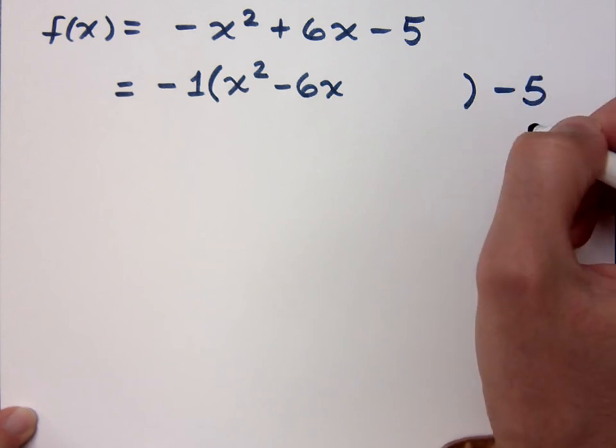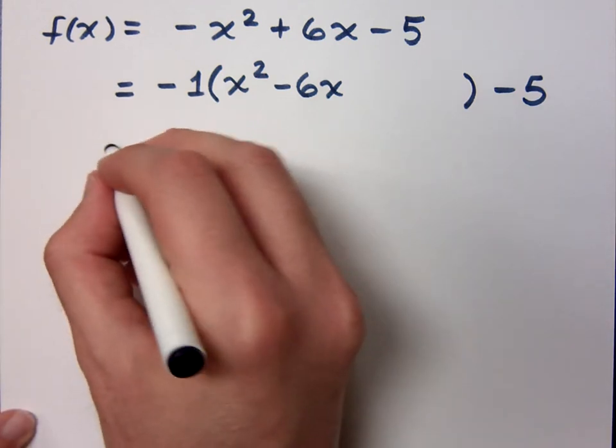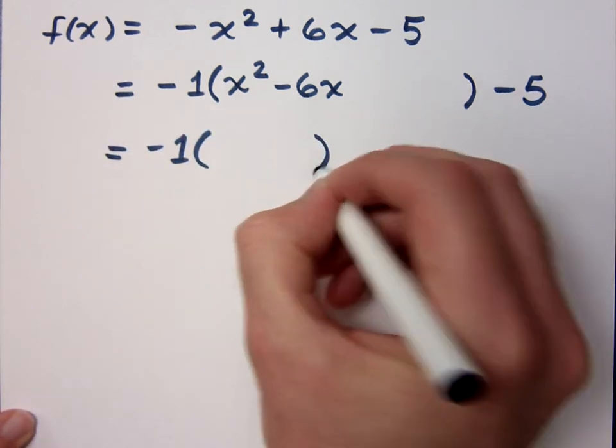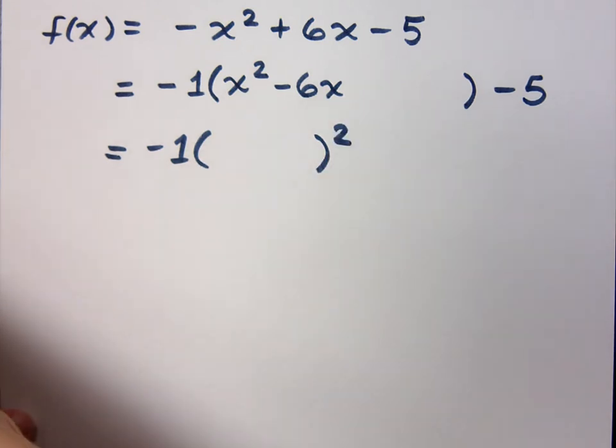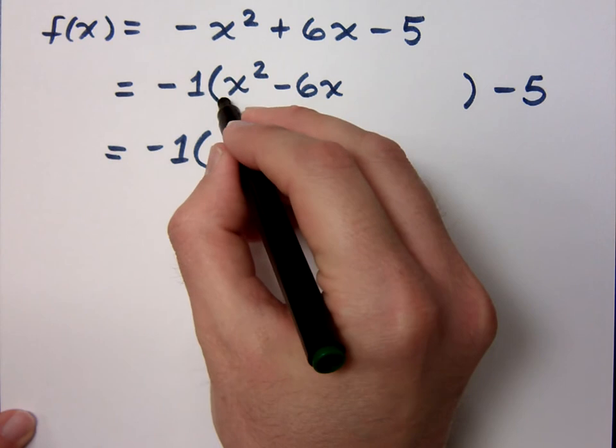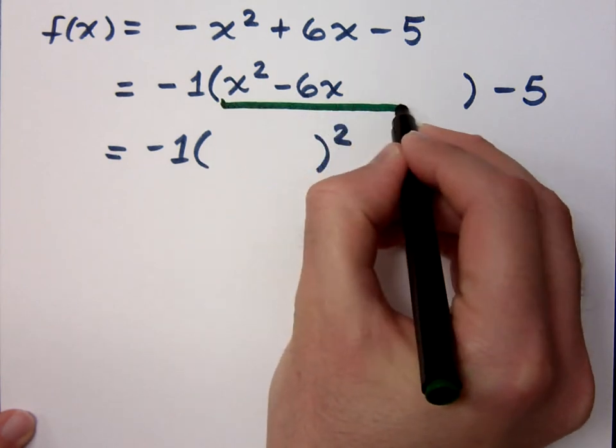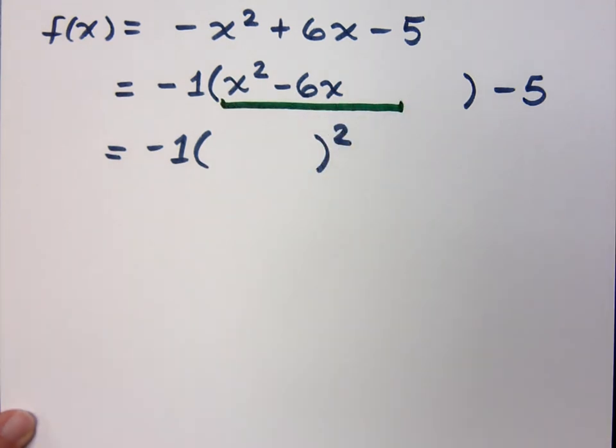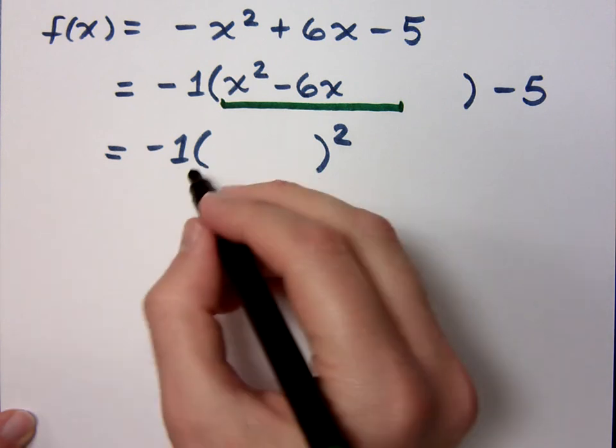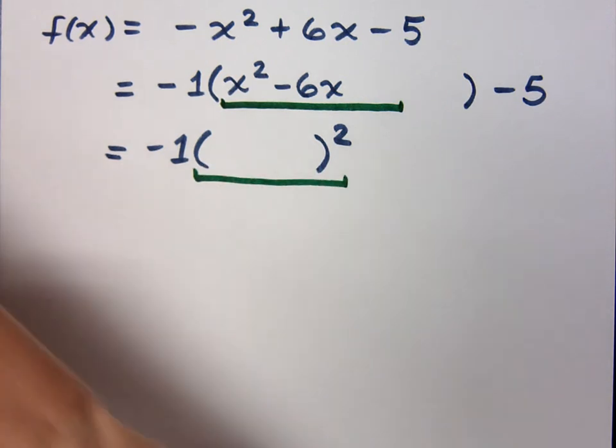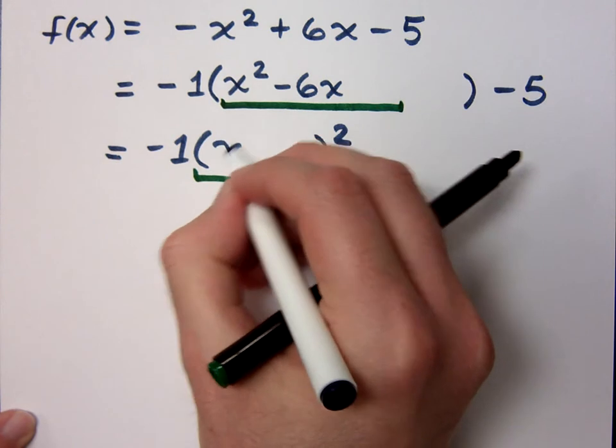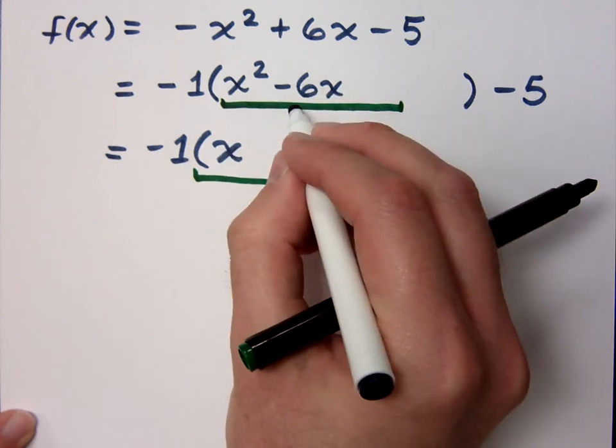Is that okay to leave some space there? Now we know that this guy is supposed to factor as something that's squared, but as we saw in the last example, it's only going to be the first part of this. So that's what's going to go here. Now, how do I figure out how this factors? Remember how we did that?